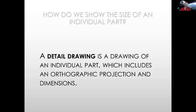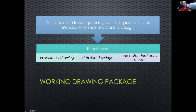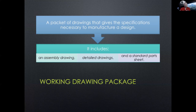Building Legos is good preparation for this — especially complex sets where you have sub-assemblies that you put together and then combine into the main assembly, sometimes with a thousand parts. So you have an assembly drawing, a sub-assembly drawing, and then individual parts. A working drawing package includes the assembly drawing, detailed drawings, and the standard part sheet. There may be multiple standard part sheets if you have many standard parts, and there are different ways to identify those parts.